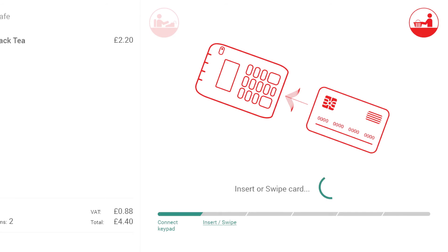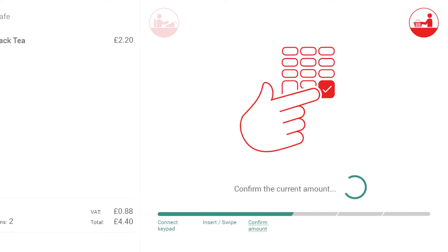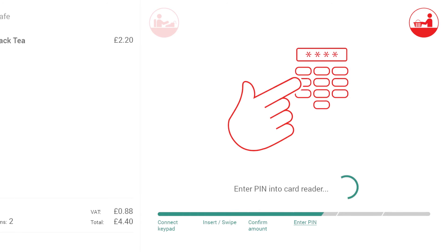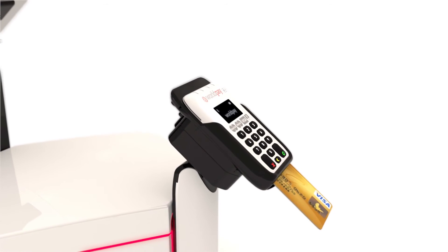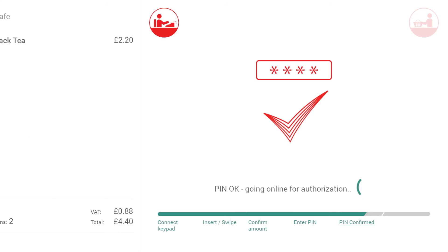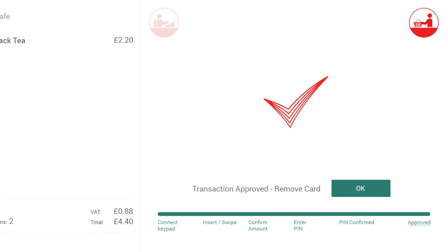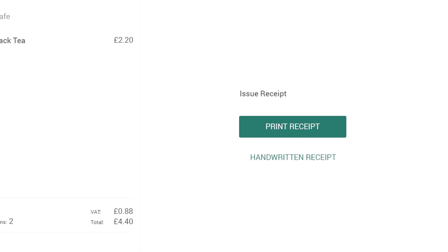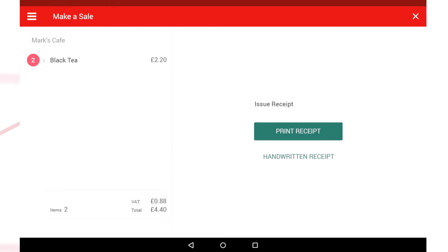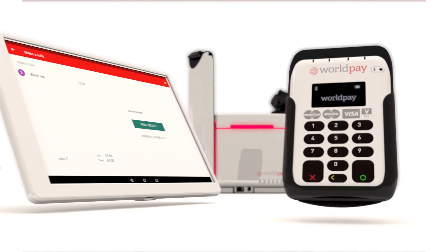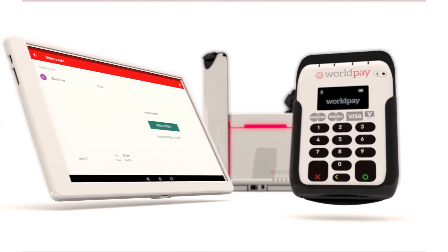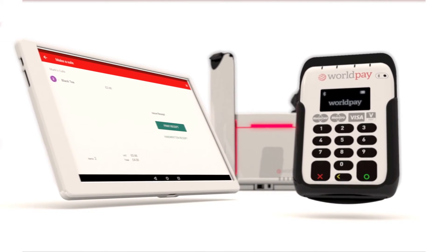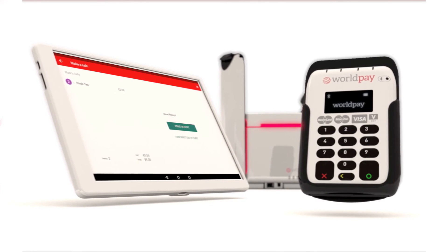Once the app is connected to the keypad, you can ask the customer to insert their card into the payment device and enter their PIN number when prompted. You will see when the transaction has been approved on your screen, at which point you can prompt the customer to remove their card. All instructions appear on both your screen and the payment device so you see what the customer is seeing.